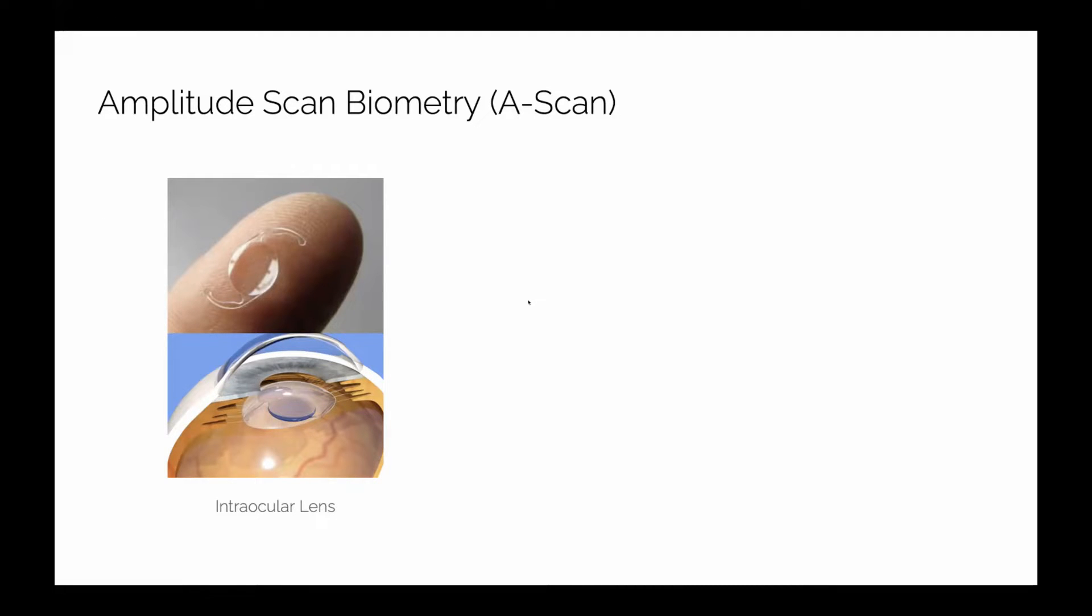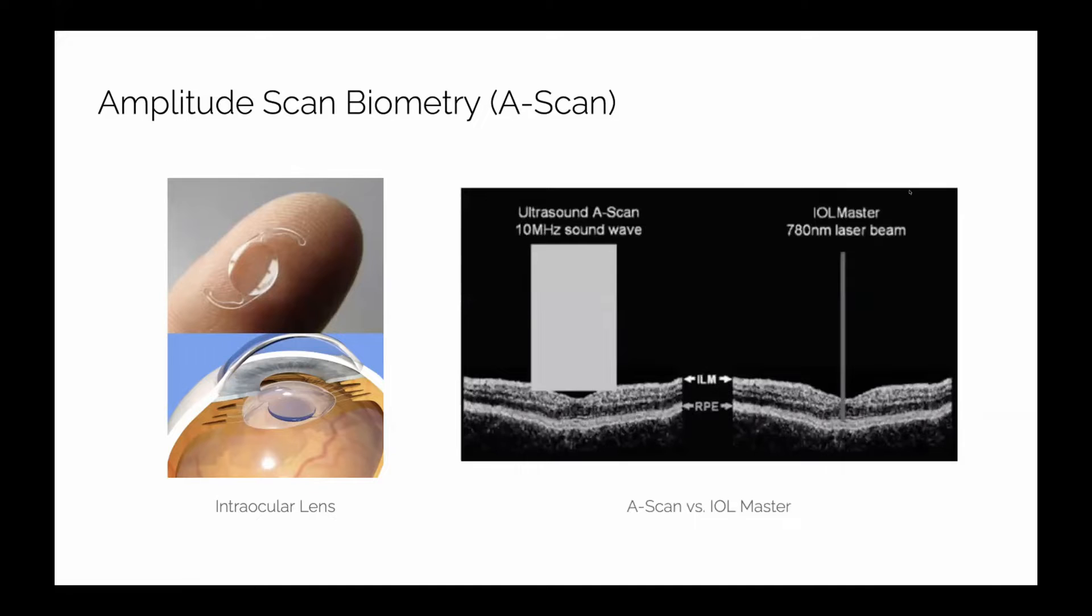It used to be the gold standard, the A-scan, for taking axial length. But actually, we've moved on to the IOL master, which uses a laser beam instead of an ultrasound beam to measure the length of the eye. You can see just how much more precise it is - it's such a skinnier beam than the ultrasound. It can actually go all the way down to the RPE layer. We've been using more of the IOL master for pre-op measurements for cataract surgery, determining axial length.